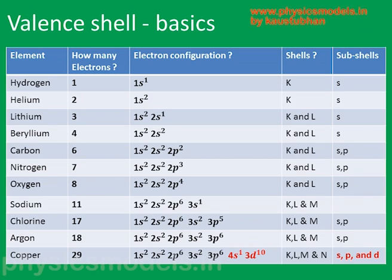For chlorine, the configuration goes on to the third orbit, which is the cyan blue. So you have 1S2, 2S2, 2P6, 3S2, and 3P5. In 3P5, we could have gone up to six, but there are only 17 electrons, so we can only fill five electrons in the P sub-shell. Copper is an exception — we won't cover that now.